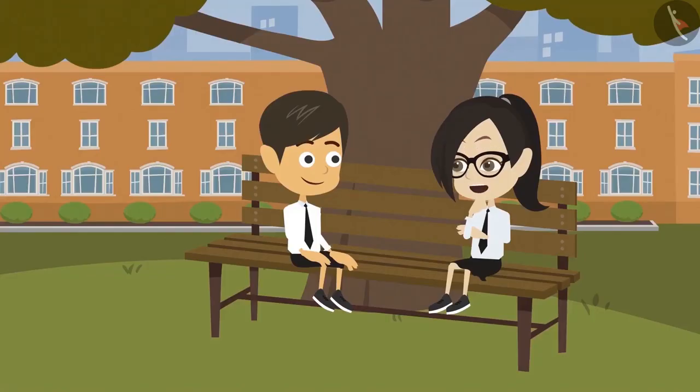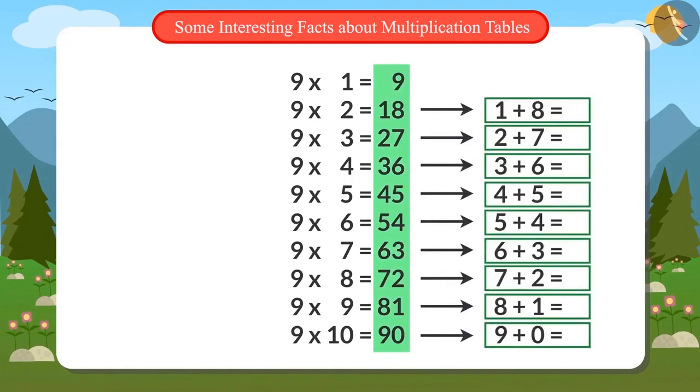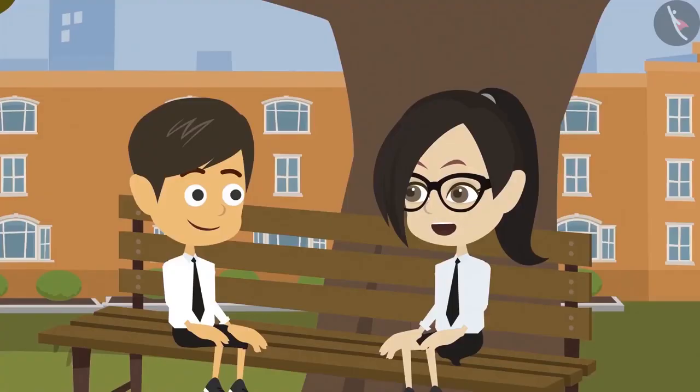This is interesting! When we add all the digits in the multiplication table of 9, the answer is 9. Do you also know some other interesting things about other tables too, Rayansh?